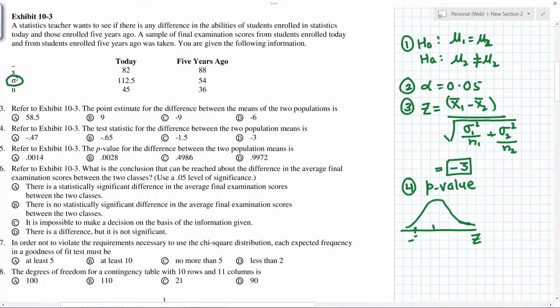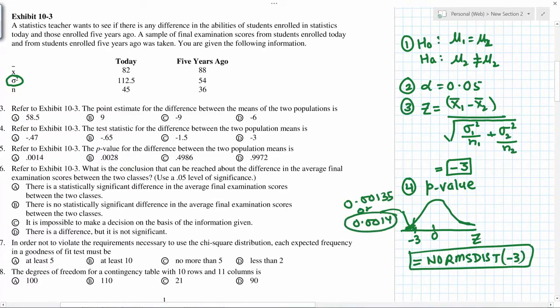And negative three is somewhere here. We need to find this area. And because this is a two-tailed test, p value equals two times this area.